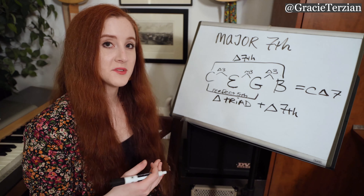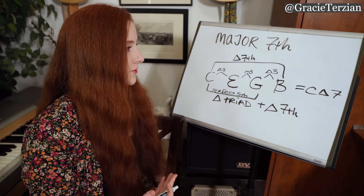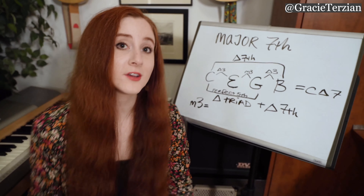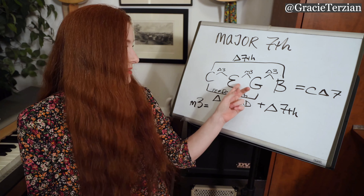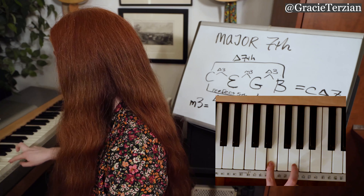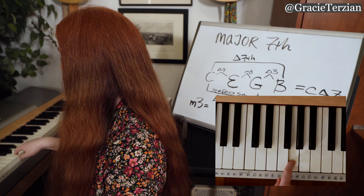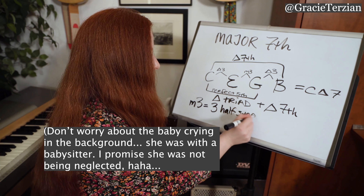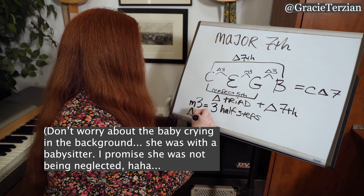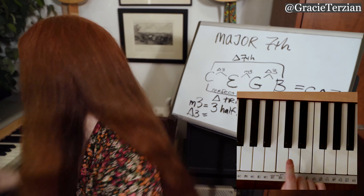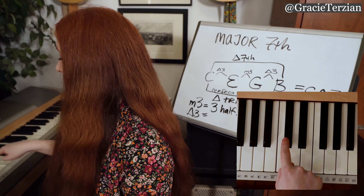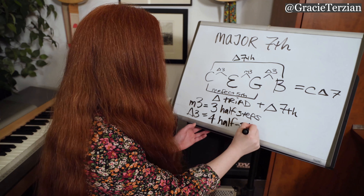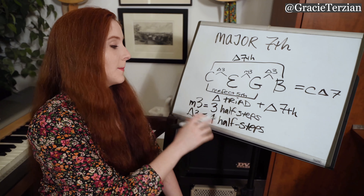Now let's analyze how many half steps are in each of these different types of intervals. The first one is a minor third — from E to G. Counting: 1, 2, 3 — that is three half steps. A minor third interval is three half steps. What about a major third? From C to E: 1, 2, 3, 4 — that is four half steps. So a minor third is three half steps, and a major third is four half steps.